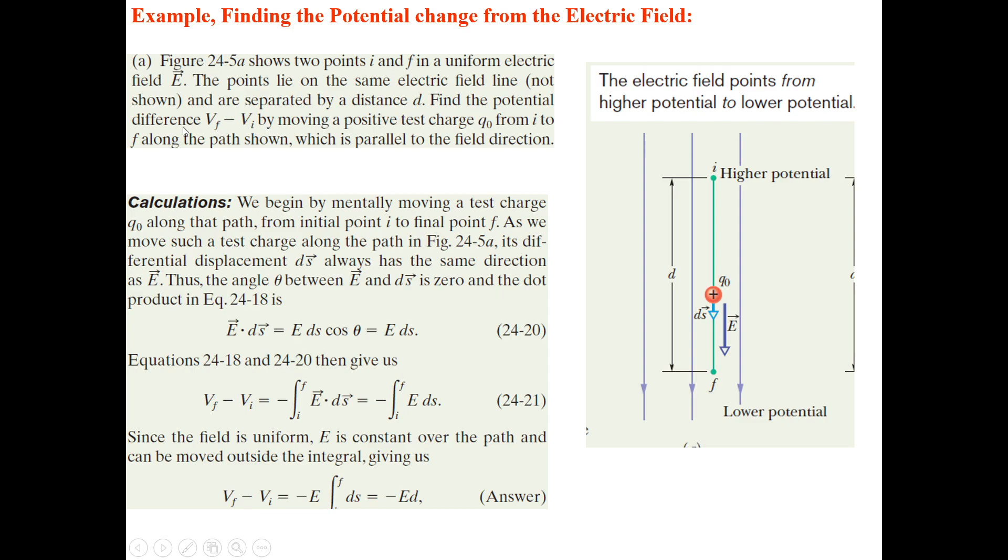Find the potential difference Vf minus Vi by moving a positive test charge q₀ from I to F along the path shown, which is parallel to the field direction.